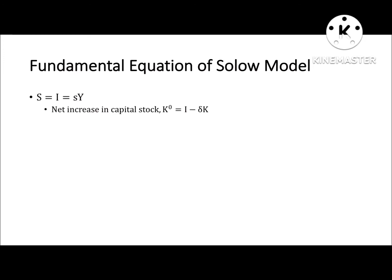The net increase in capital stock can be seen in two ways. Capital stock is a stock variable. K-dot is the time derivative of capital, and K-dot is equal to investment minus delta K.